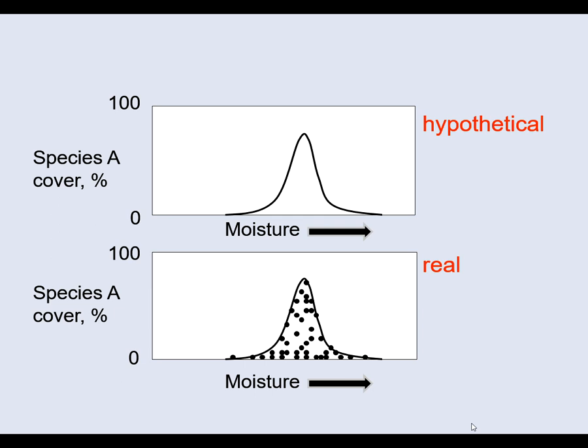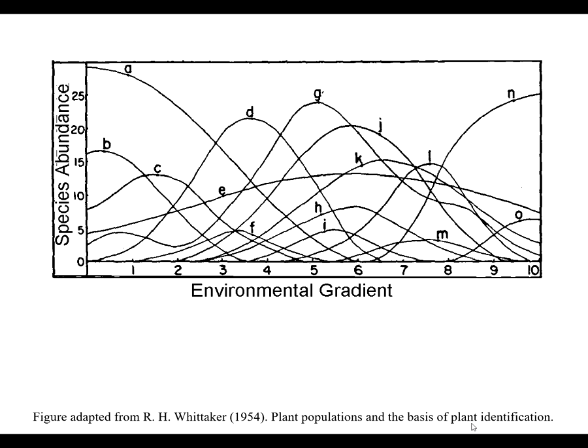This is because of the action of other factors, measured or not, including disturbance and establishment history. If we graphed all of the species on a gradient it would look something like this. Lettered lines represent different species. If we sample the community at a given point we are recording the abundance of each species at that point.